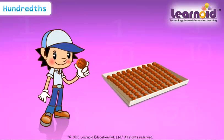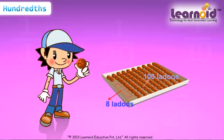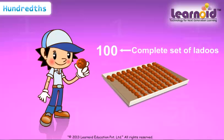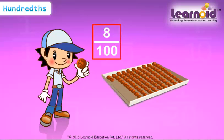Now if Shyam ate 8 Ladoos from the box, we can say he ate 8 out of 100 Ladoos. Parts eaten: 8. In fraction, we can say 8 by 100.